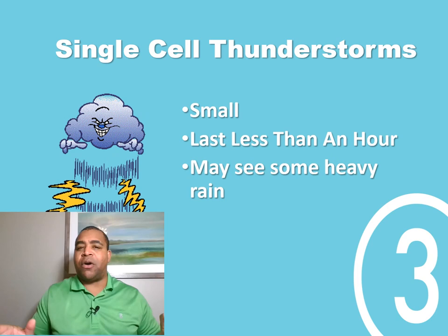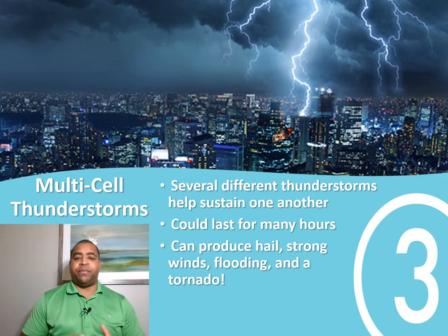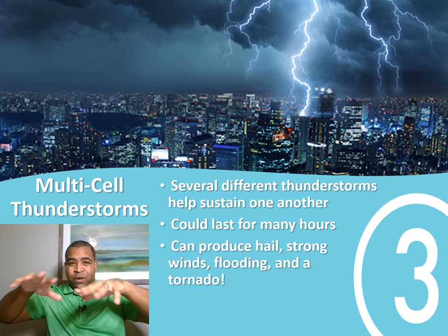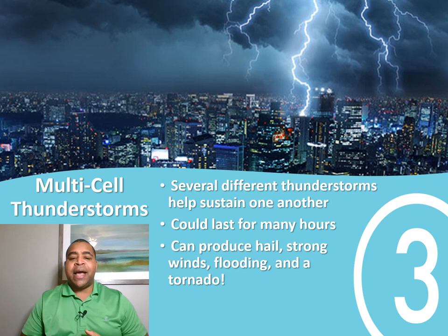Then we have what we call multi-cell thunderstorms. This is when things start getting a little bit more dangerous, because instead of just one thunderstorm, there are usually a couple acting as a family near each other. One thunderstorm actually helps another retain its life, which is pretty cool. Some of these multi-cell thunderstorms can actually last for several hours because they're basically helping one another stay alive.